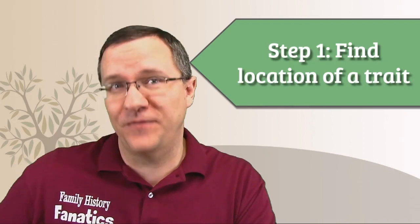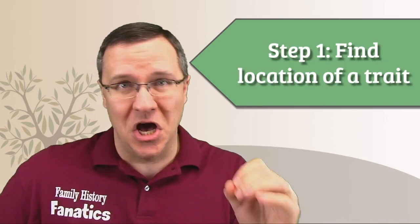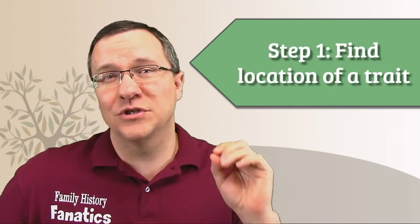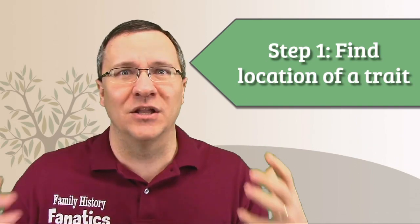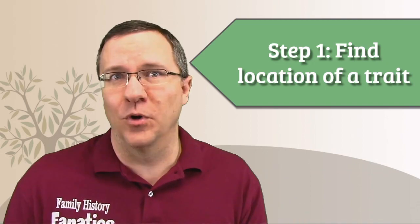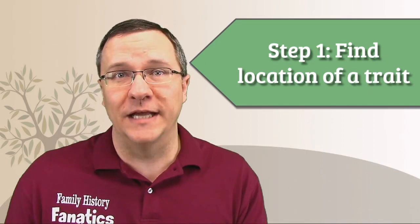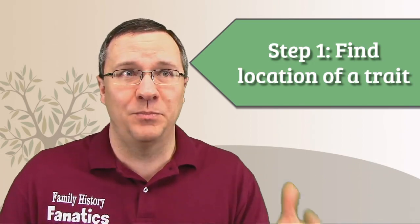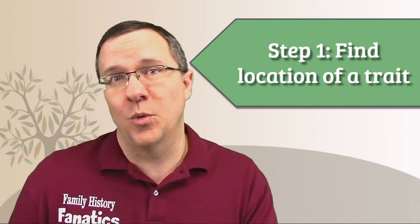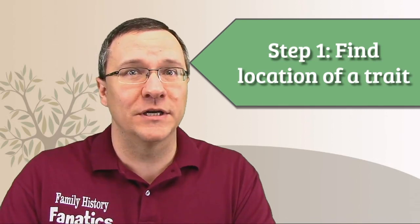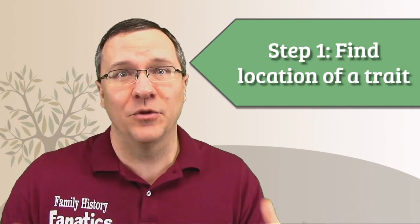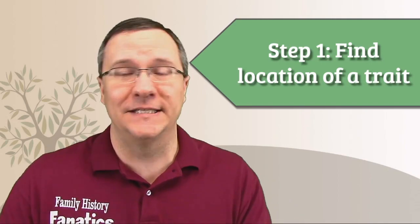The first step is that we need to find the specific location of a trait. Now it's important to recognize that most traits and medical conditions are not dependent on a single gene in our chromosomes. There's actually a lot of genes that interact to form those traits. However, there are some traits that are defined by a single gene. For instance, we're going to use the blood group gene ABO today in order to see if we can find other matches that might have the same blood type as us.